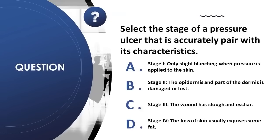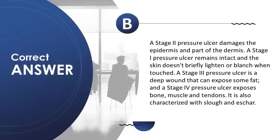Question 29: Select the pressure ulcer stage accurately paired with its characteristics: A) Stage I — only slight blanching; B) Stage II — epidermis and part of dermis damaged or lost; C) Stage III — wound has slough and eschar; D) Stage IV — loss of skin usually exposes some fat. Correct answer is B. Stage II damages the epidermis and part of the dermis. Stage I skin remains intact and briefly blanches when touched. Stage III exposes some fat; Stage IV exposes bone, muscle, and tendons and is characterized with slough and eschar.